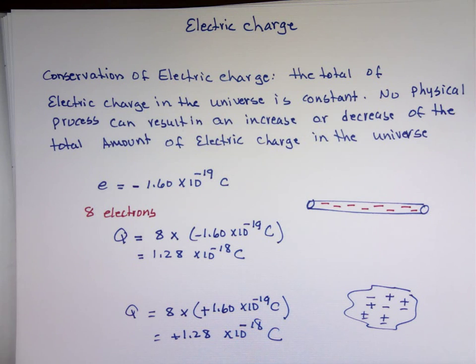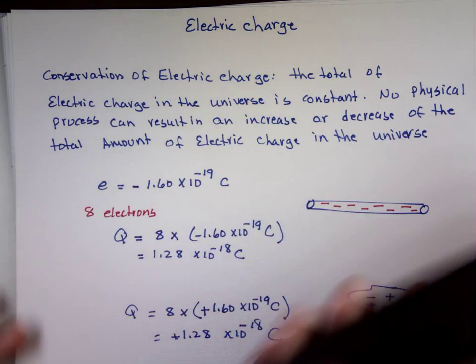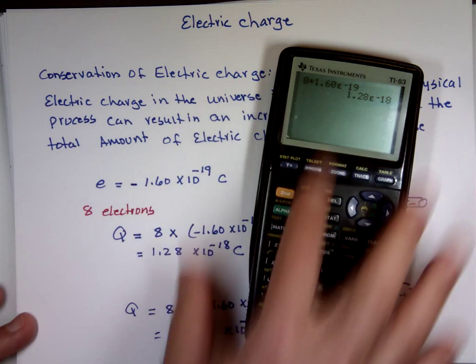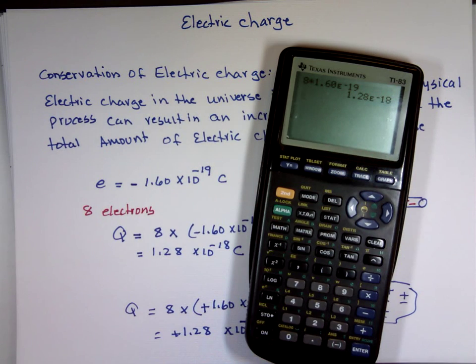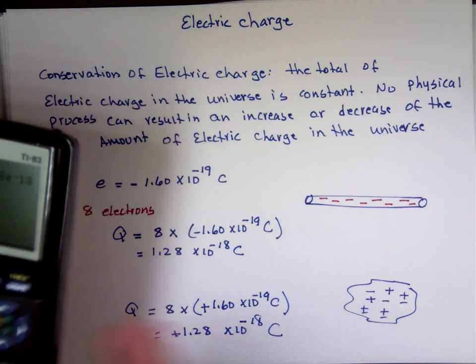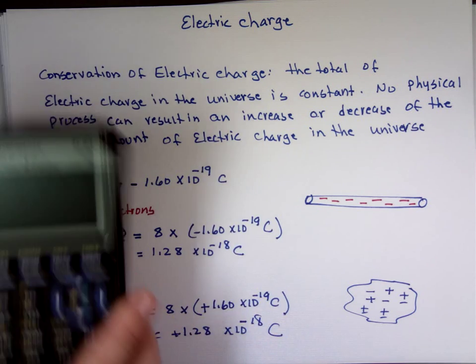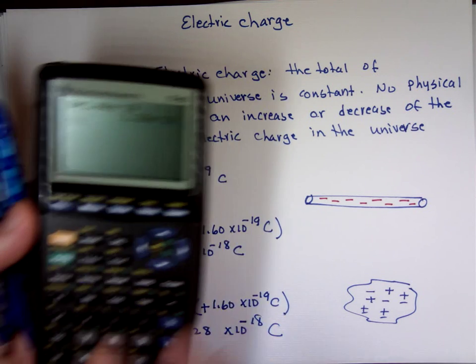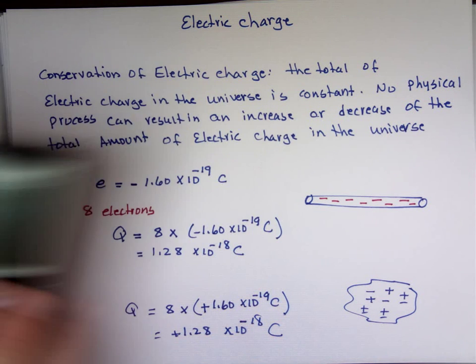So when you see an object like this and it's not charged, that's because the number of negative and positive charges are equal. If I can add to it some negative charges, this will be negatively charged. If I can take out some negative charges out of this calculator, this will be positively charged.